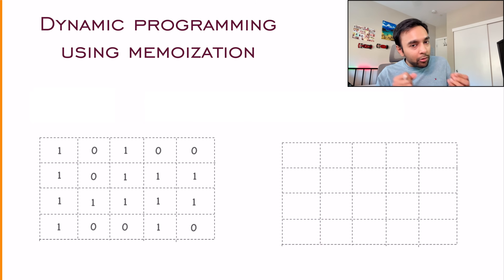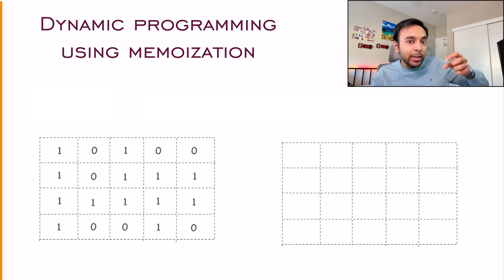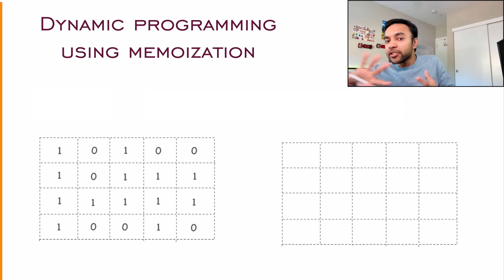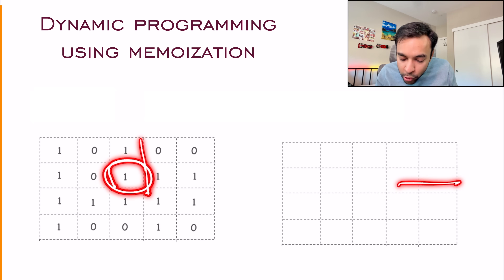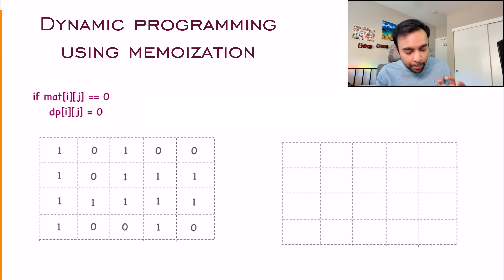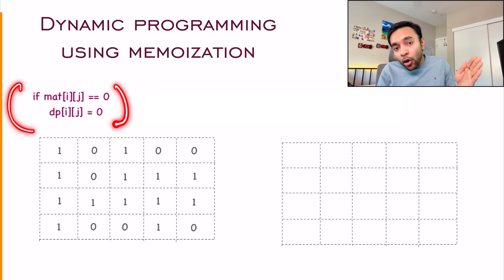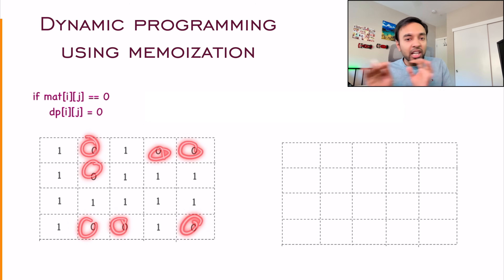We can now get an idea of how our memoization array is going to look. A memoization array represents the solution at a particular point, and you use that value to find all future values. There are only two conditions: if the element is zero, I cannot form a square, so the memoization value is also zero. All zero-matrix positions can be set to zero in the memoization array straight away.